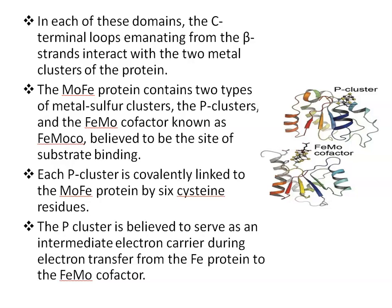The molybdenum-iron protein contains two types of metal-sulfur clusters. The first is the P cluster. Each P cluster is covalently linked to the molybdenum-iron protein by six cysteine residues. The P cluster is believed to serve as an intermediate electron carrier during electron transfer from iron protein to the iron-molybdenum cofactor.